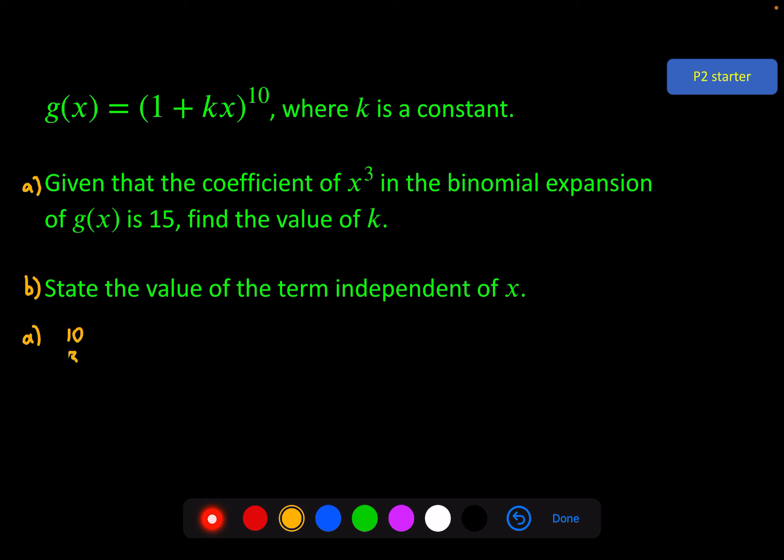So I'm going to have (10 choose 3) times a, which in this case is 1, to the power of n minus r, which is 7, times the b term, which is kx, to the power r, which I've chosen to be 3 in order to get the x^3. So this is the general term of the formula where n = 10, r = 3, a = 1, and b = kx. And if I simplify all of that using my calculator, 10 choose 3 is 120, 1 to the power of 7 is just 1, and then I've got k^3 x^3.